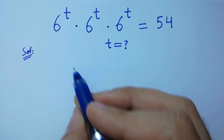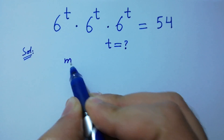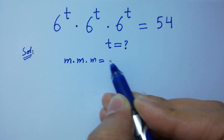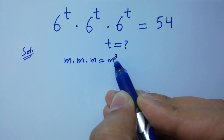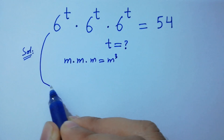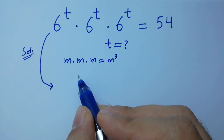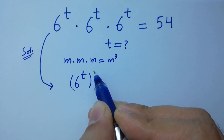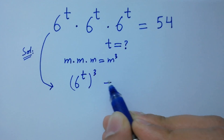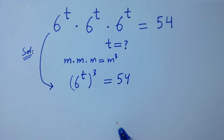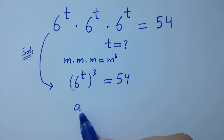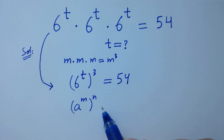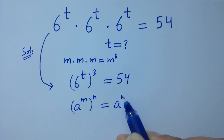As we know m times m times m equals m cubed, it will be 6 to the power t to the whole power 3, equal to 54. Using the rule a to the power m to the whole power n equals a to the power mn.